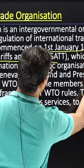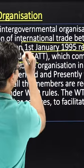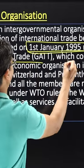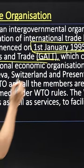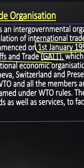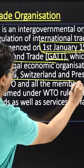WTO officially commenced on 1st January 1995. Its former name is GATT. Its head office is in Geneva, Switzerland.